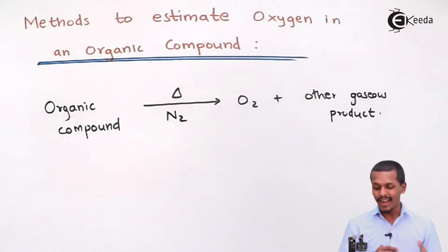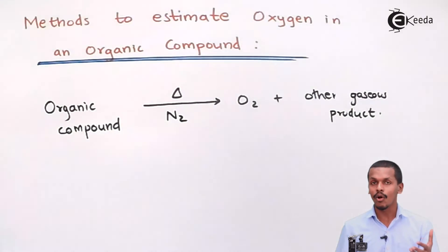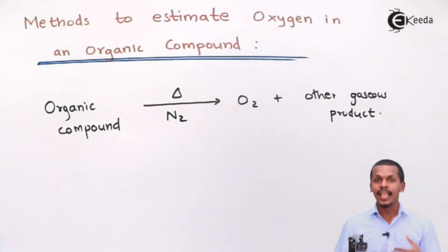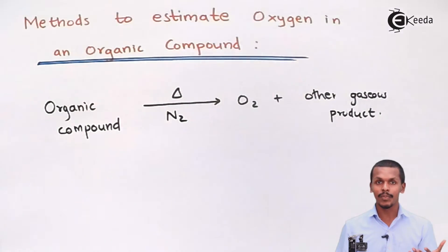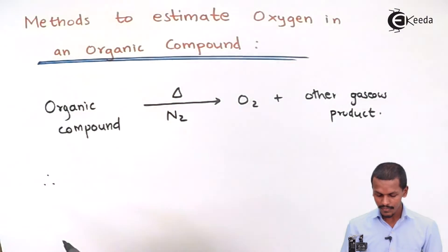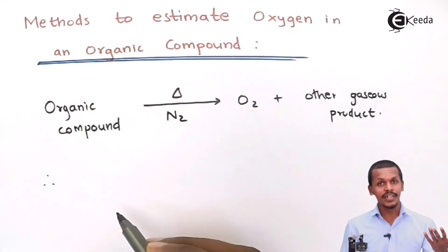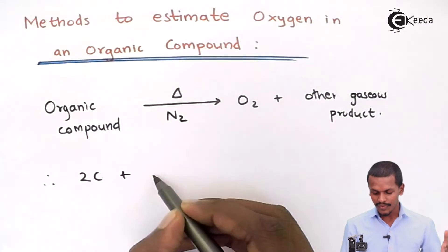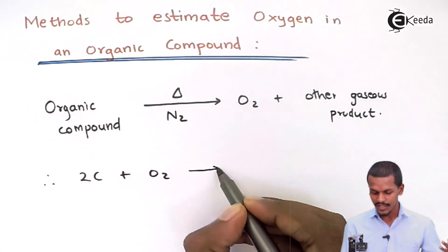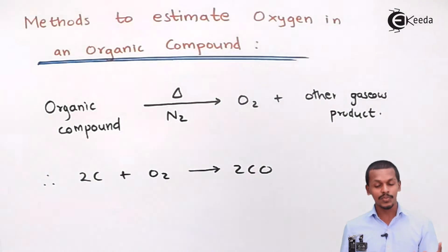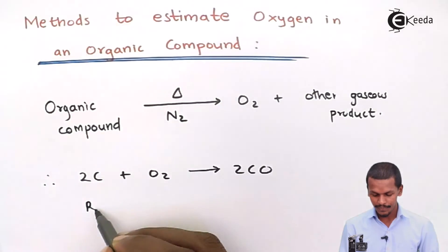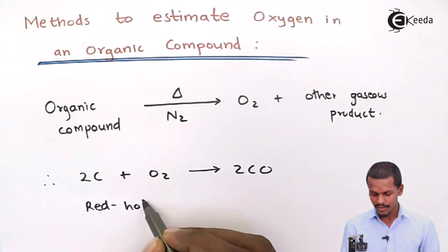Once the oxygen is obtained, we pass all the gases through a red hot coke material. The reaction between carbon and oxygen takes place such that carbon monoxide is produced. So: 2C + O₂ → 2CO. This is the product obtained when the gases are passed through red hot coke. Let this be Equation 1.